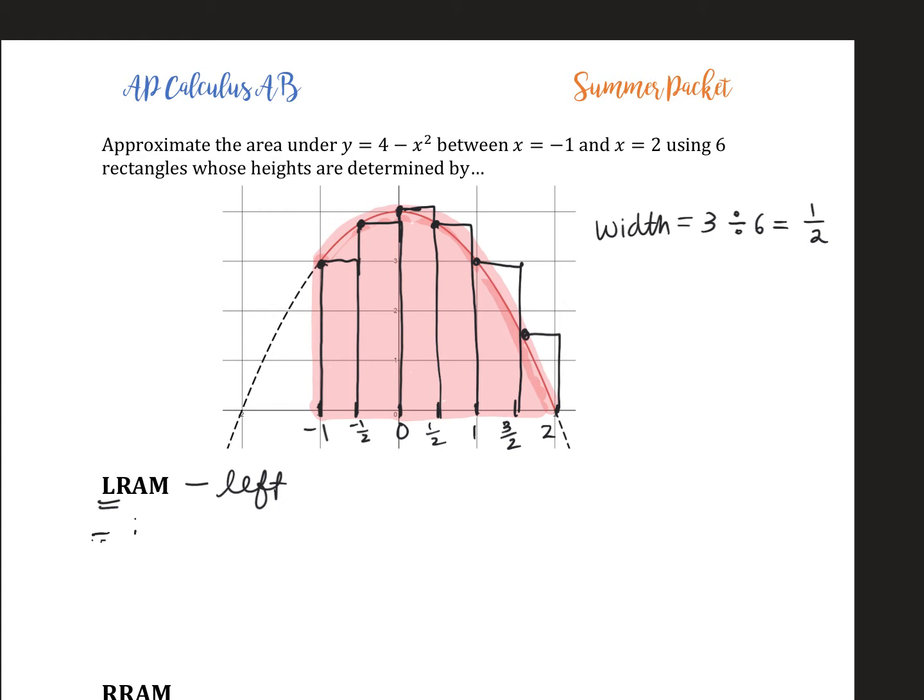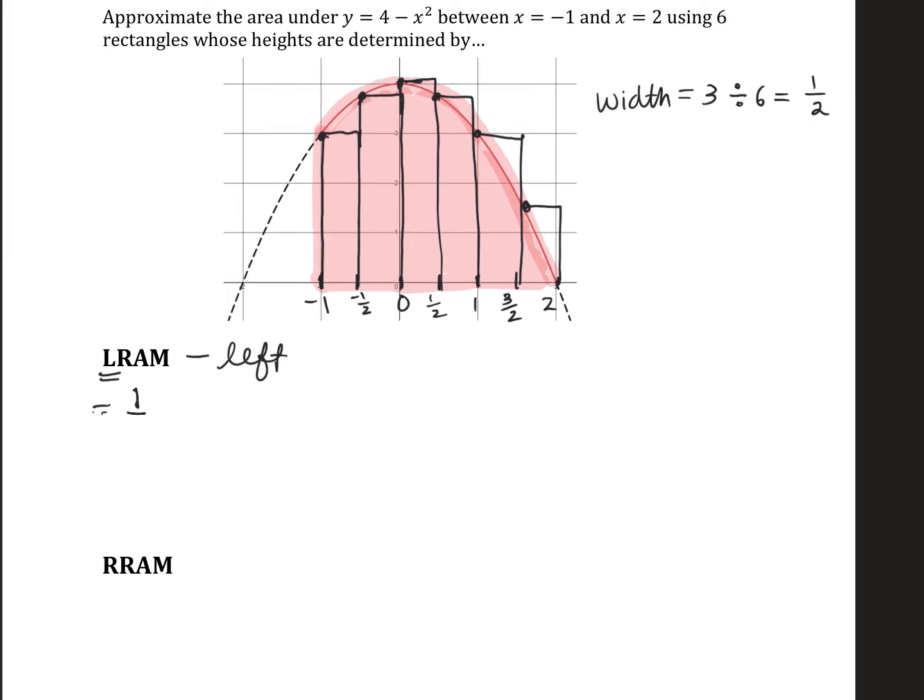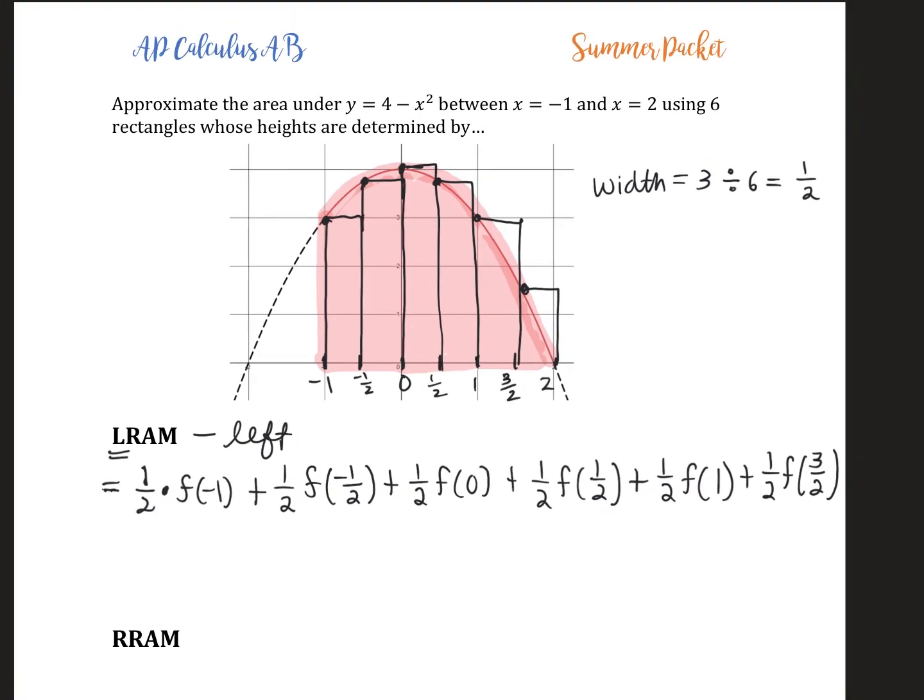Rectangle 1 is base 1 half times the height f of negative 1, the y value at negative 1. The second is 1 half times f of negative 1 half. The third rectangle has base 1 half and height at x equals 0. The fourth has height at x equals 1 half. The fifth at x equals 1, and the sixth at x equals 3 halves. Now I'll find f of negative 1, f of negative 1 half, f of 0 by plugging into the function f of x equals 4 minus x squared.